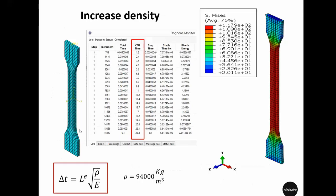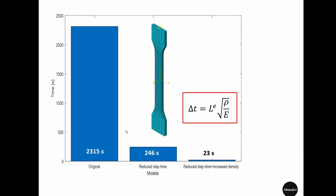The force-displacement responses were almost identical. That means in this particular case, by increasing the density and also by reducing the step time, the simulation result did not vary much — not in force-displacement response and not in stress distribution or deformation — but we made a significant gain in simulation time. The original took 2300 seconds; reducing step time gave 246 seconds; adding density increase gave only 23 seconds.